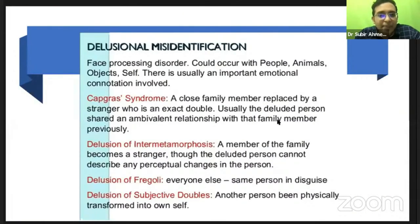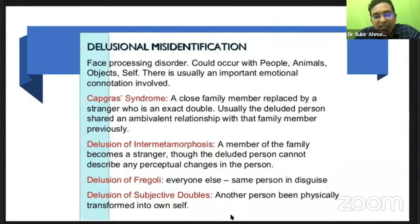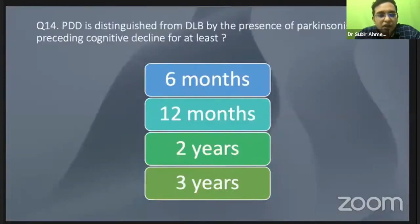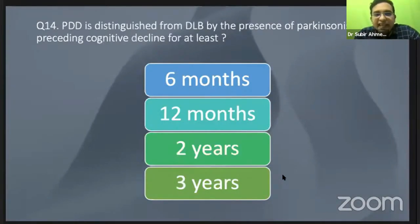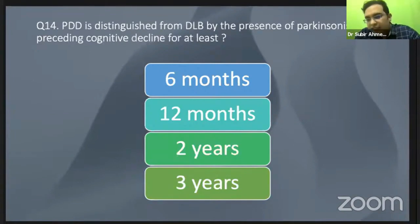One is Capgras syndrome and the other is Fregoli syndrome. Capgras is where a close family member is replaced by a stranger, and Fregoli is the other way around. As you know, even Parkinson's disease can have dementia, and dementia with Lewy body always has dementia.